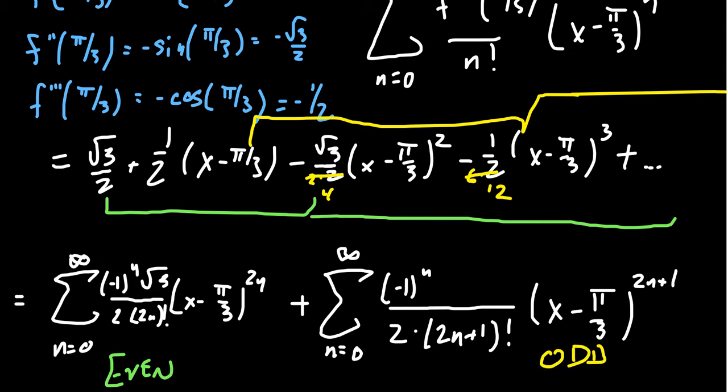This Taylor series centered at pi thirds is a little more messy than the Maclaurin series for sine. The Maclaurin series is generally much cleaner as a power series than ones centered somewhere else — that's one of the reasons we really like the Maclaurin series.